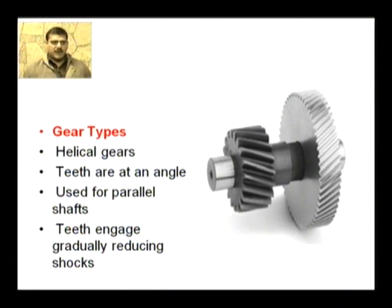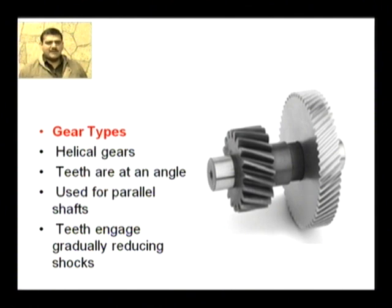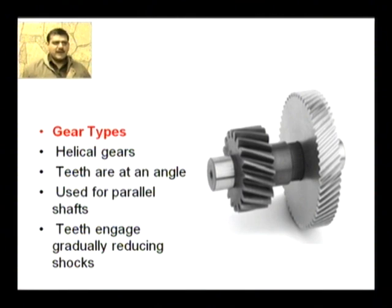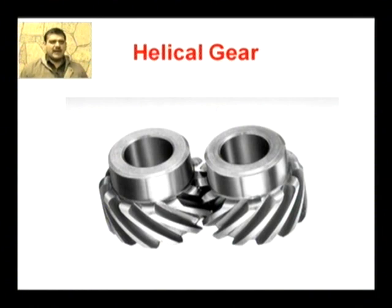Gear types: Helical gear — in helical gear, the teeth are at an angle, as shown in the diagram. These are used for parallel shafts. The teeth engage gradually, reducing shocks — that is, to prevent and reduce the effect of shocks in applications where they may occur, these gears are used. The diagram shows how meshing of helical gears occurs, with angular teeth cut at an angle so that their meshing is proper and they can absorb shock easily.